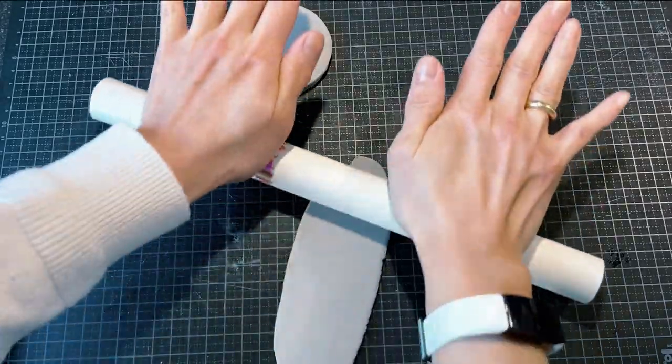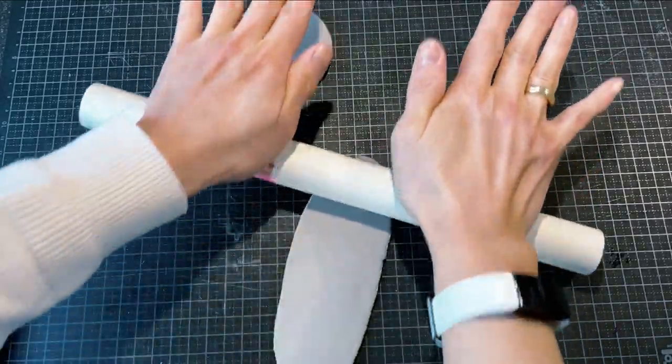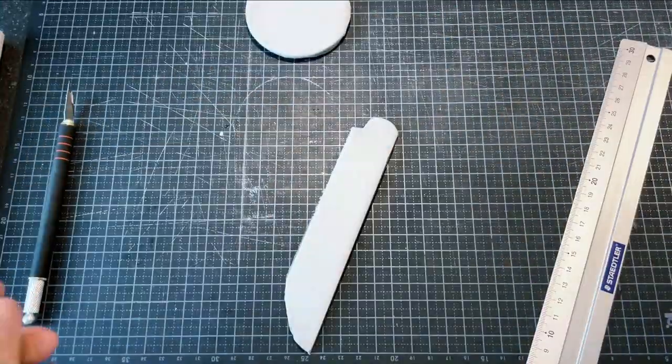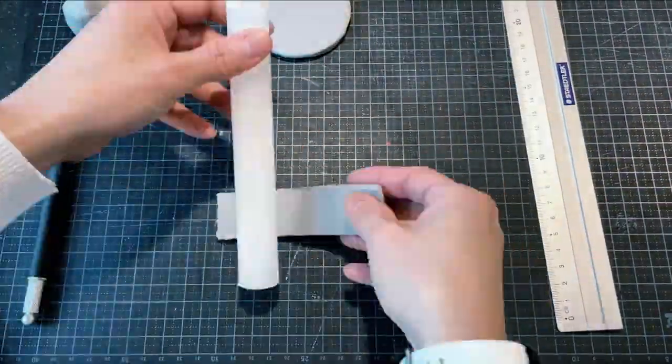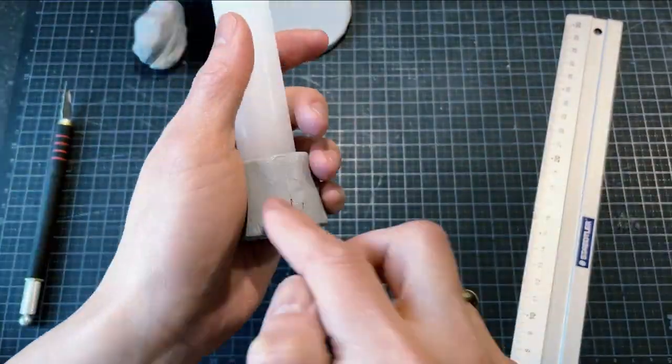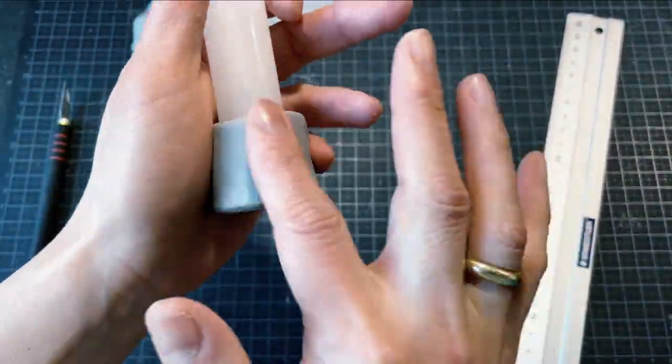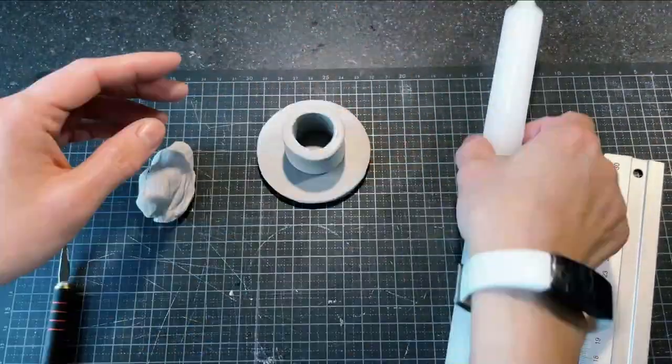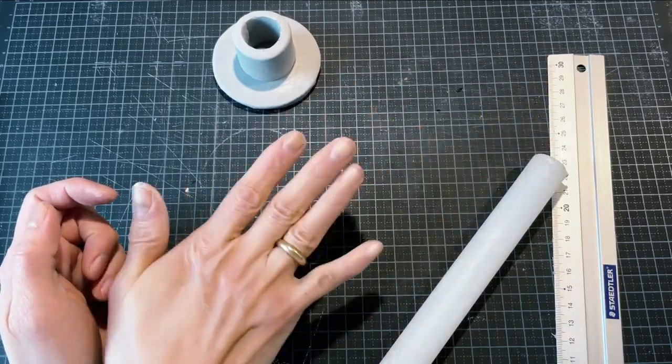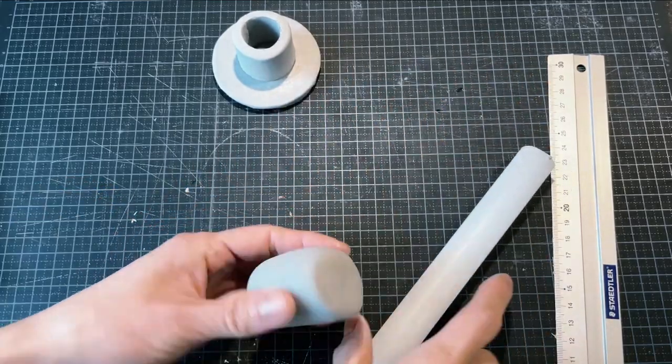I will make the candle holder like this. When attaching clay parts, it sticks well if it is lightly moistened with water. And this is the easiest way in the world to make a candle holder.